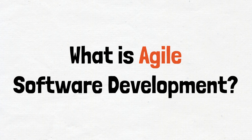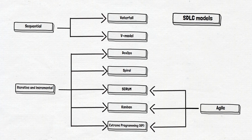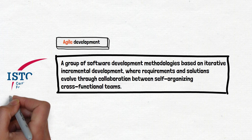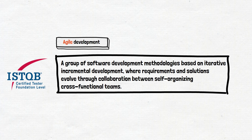Hi everyone. In this video we'll try to find the answer to the question: what is agile software development? Agile development is a huge topic; we will not cover all aspects of it in this video. We'll familiarize ourselves with the definition, manifesto, and principles. We begin with an explanation given by ISTQB — the link to the ISTQB website will be provided in the materials. The definition emphasizes iterative, incremental development and self-organizing cross-functional teams.